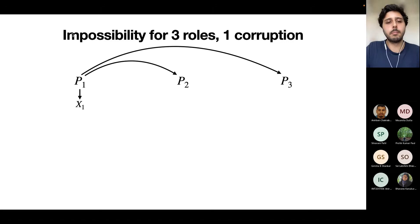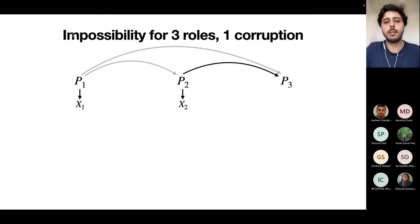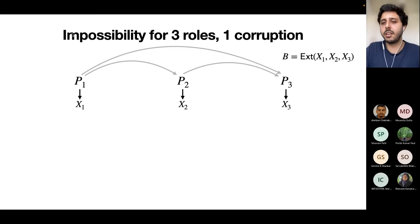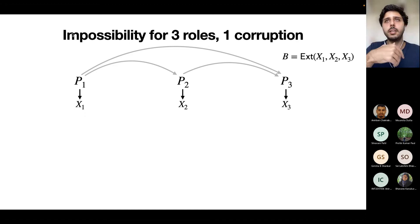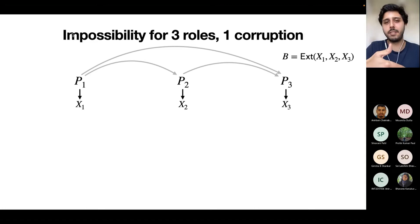Let me give a rough idea of the impossibility result for the simpler scenario of three roles and one corruption. P1 broadcasts X1 and sends private messages to P2 and P3. P2 broadcasts X2 and sends a private message to P3. P3 broadcasts X3. You compute the coin as a deterministic function of X1, X2, and X3. We corrupt parties one by one to derive properties required for each corruption not to work, then derive a contradiction.